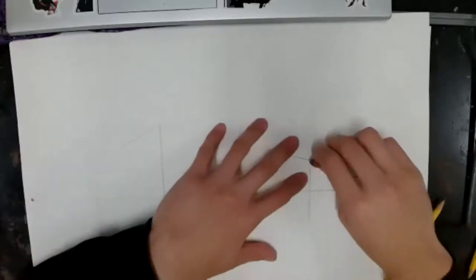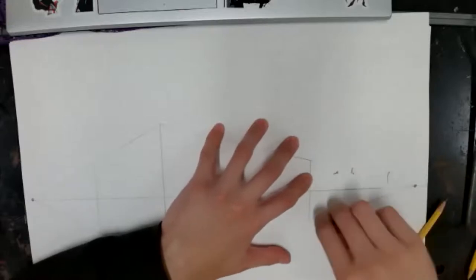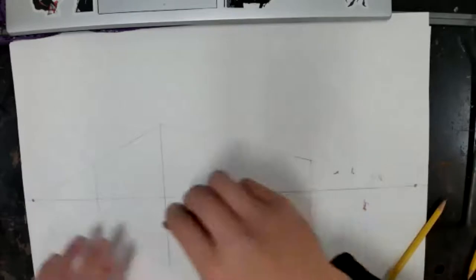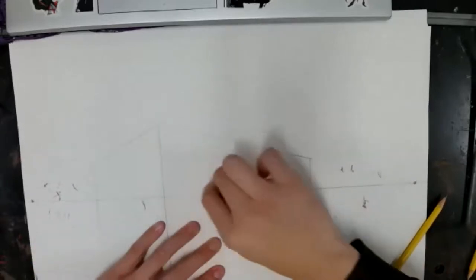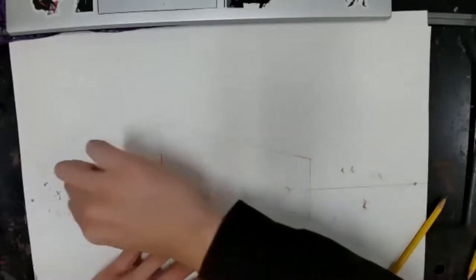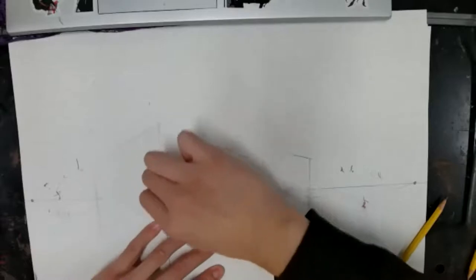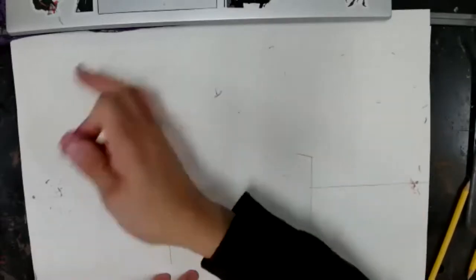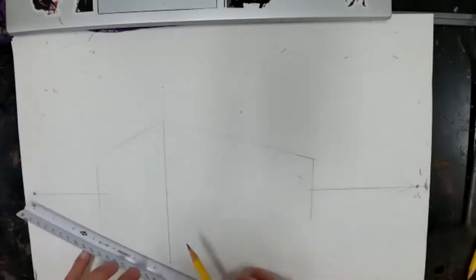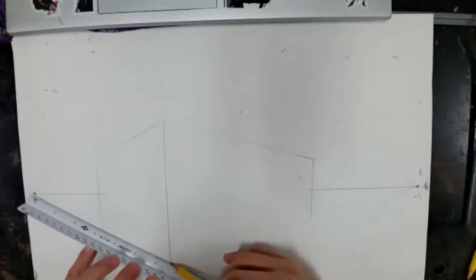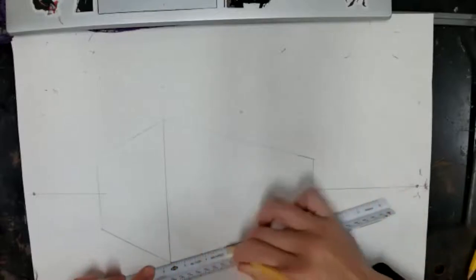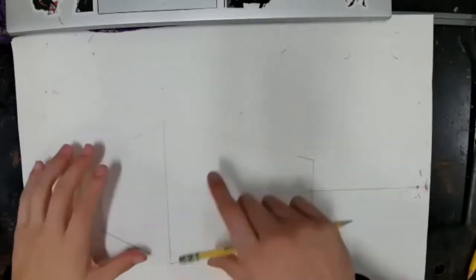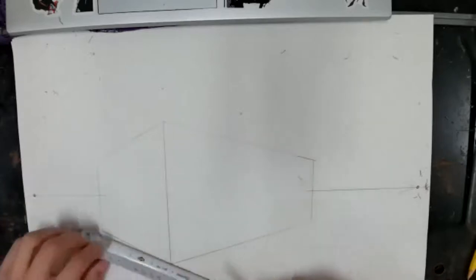I'm going to erase some lines that I don't need — lines that are not part of the building. Also erasing the horizontal line inside the building. Now I can see my building. I'm going to make the bottom line thicker so you can see it better. That's the side of the building. Now let's do a rooftop.